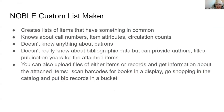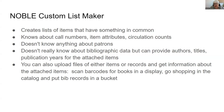What we're talking about is a Noble Custom List Maker. It creates lists of items that have something in common — for example, items in a shelving location that are currently marked missing. It knows about call numbers, item attributes, and circulation counts, but doesn't know anything about patrons. It doesn't really know about bibliographic data — you can't say show me books about puppies — but it can provide authors, titles, and publication years for the attached items it finds. You can also upload files of items or records.